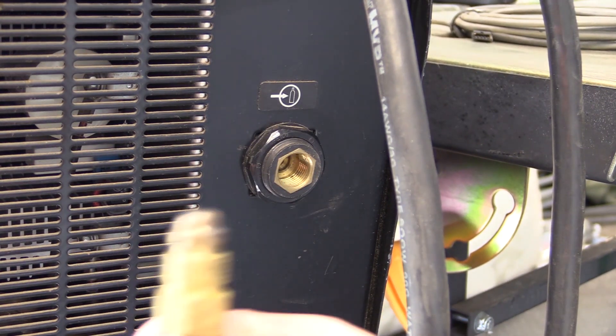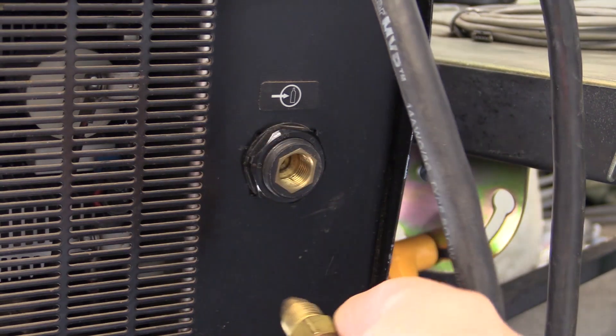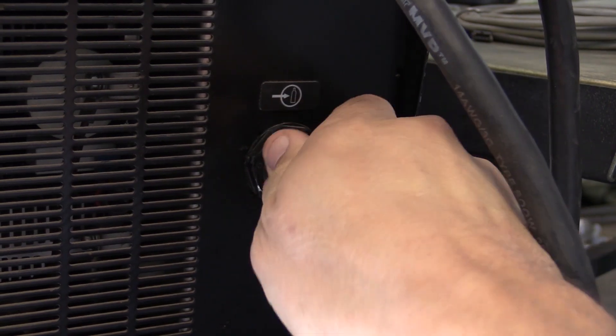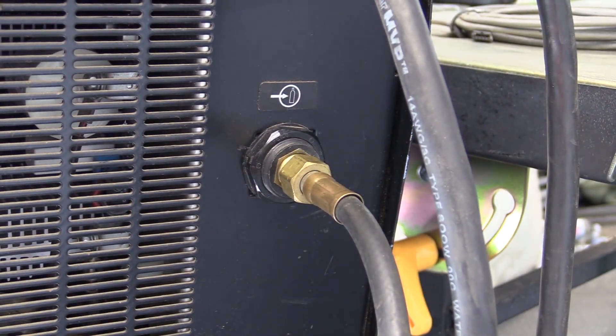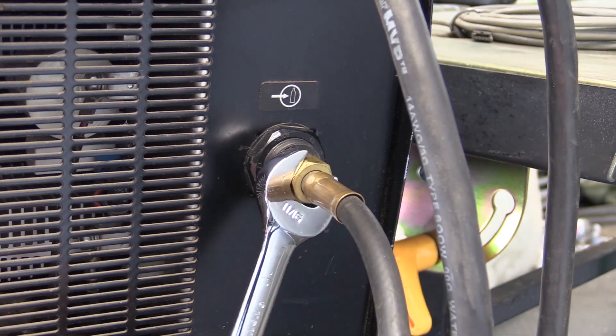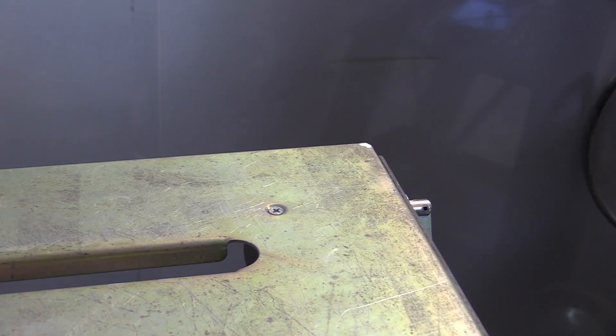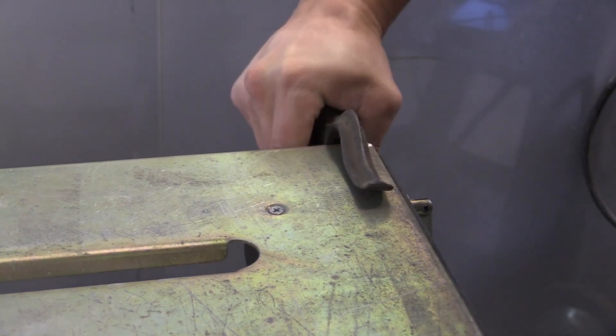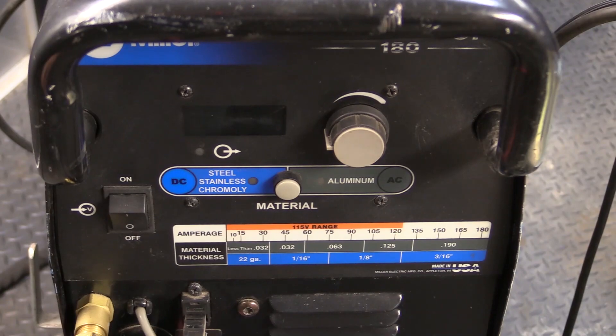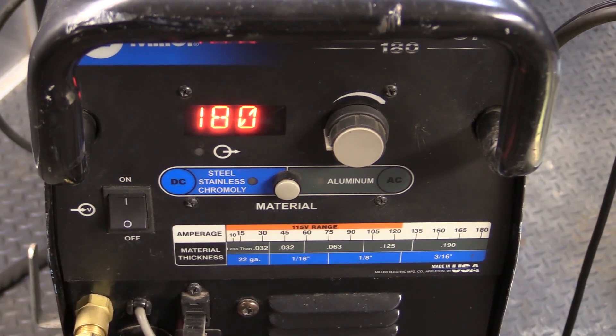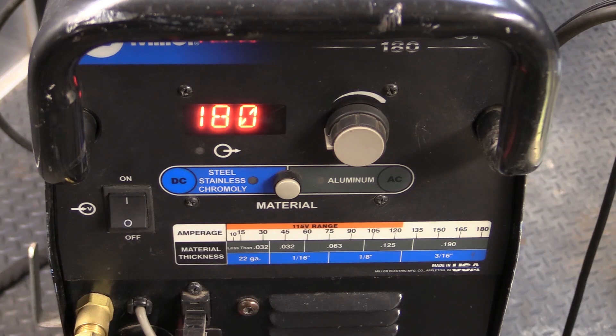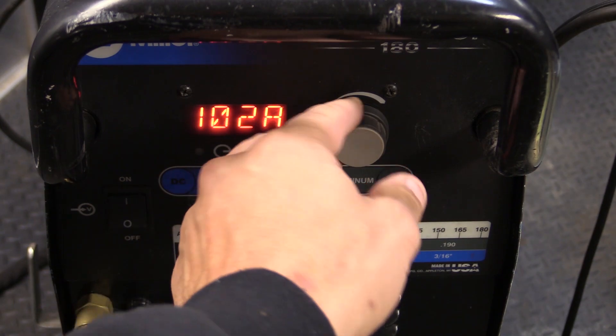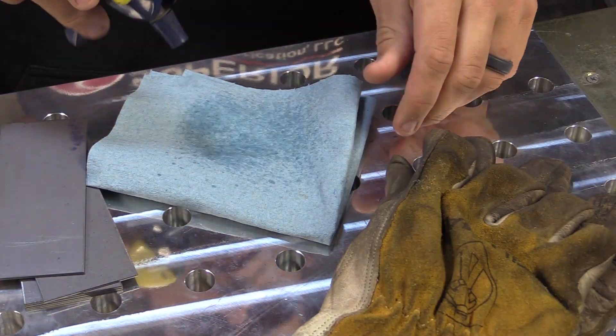The back of the machine is similar, same inert gas hose fitting. Obviously, we've got to turn the machine on, and each machine has the on-off switch in a different location. Some are on the front, some are on the back. You'll notice here we can select up to 125 amps on 110-volt power.